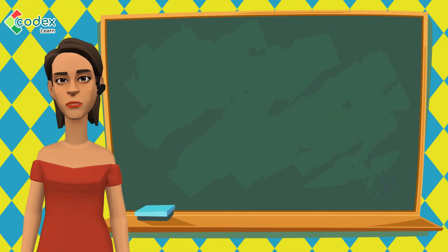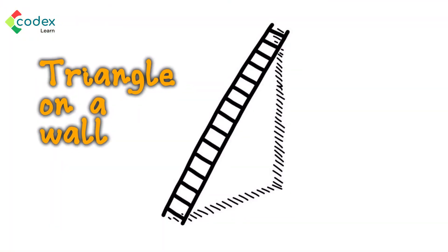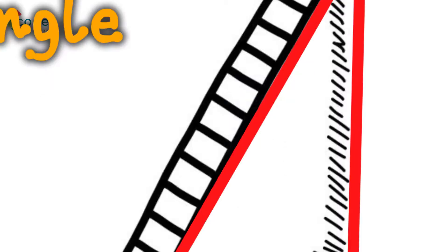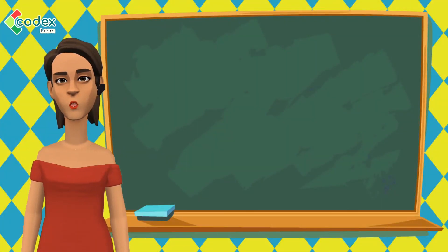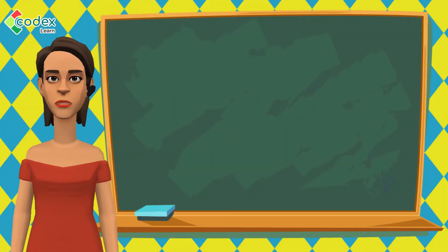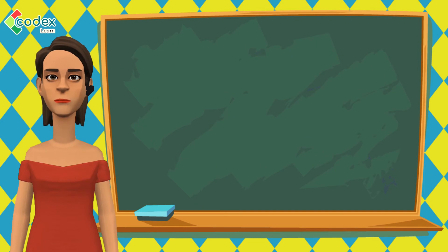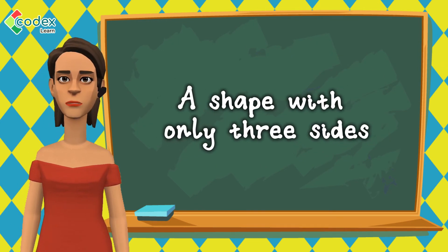Did you know a ladder leaning on a wall also forms the shape of a triangle? I bet you did not imagine all that. All these objects have the shape of a triangle. So when you think of a triangle, you should imagine a shape with only three sides.